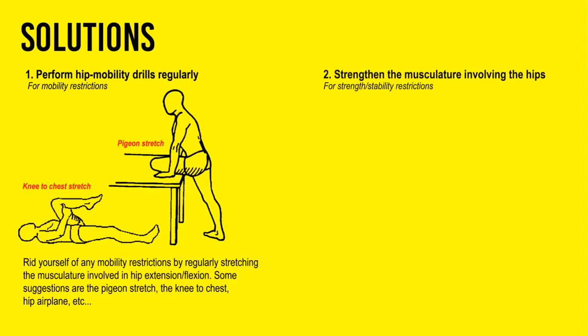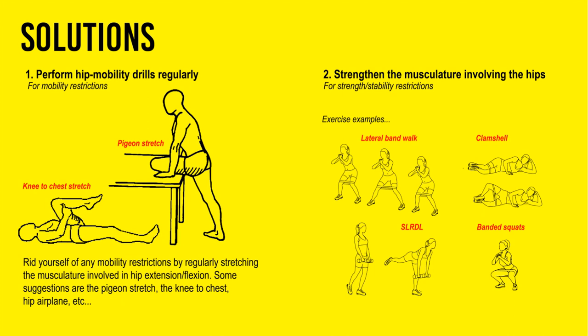What are some solutions? It can be either a mobility issue or a stability issue — if unsure, do both simultaneously. Do mobility work like the pigeon stretch and knee-to-chest stretch, and stretch the glutes and hamstring area to really open up those hips. For stability, strengthen the glutes and hamstrings with lateral band walks, clamshells, single-leg Romanian deadlifts, and banded squats. There's no secret exercise — you just have to choose a specific concept and stick to it. The hard part is doing it consistently, day after day, because this is a very gradual process.